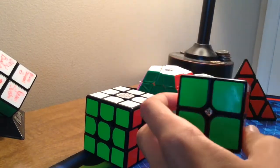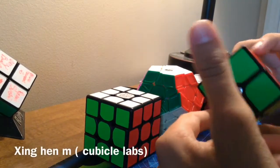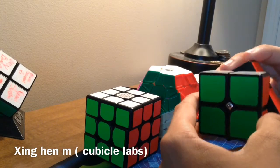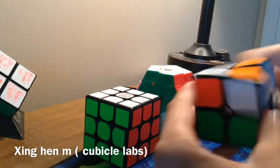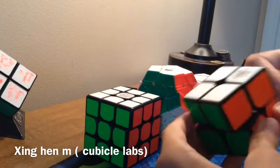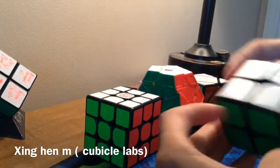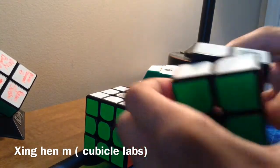My current main is the Xinghen 2x2 Magnetic from Cubicle Labs. It's a very good puzzle. It's magnetic 2x2. My only magnetic puzzle that I have besides my scube. It's a very good puzzle.